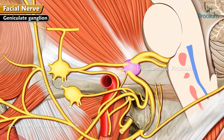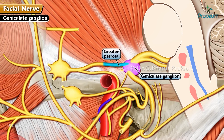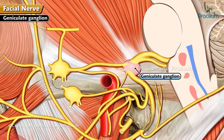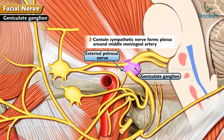The geniculate ganglion also gives a branch called the greater petrosal nerve, which joins the deep petrosal nerve — which carries sympathetic fibers — to form the nerve to the pterygoid canal. The nerve to the pterygoid canal contains preganglionic parasympathetic fibers to the sphenopalatine ganglion. The geniculate ganglion also receives the external petrosal nerve, which contains sympathetic nerve fibers and forms a plexus around the middle meningeal artery.